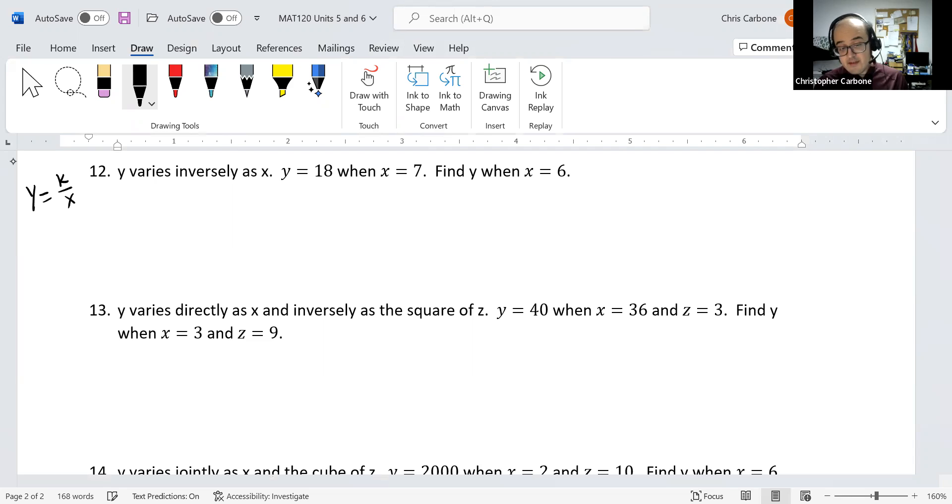When y is 18 and x is 7, 18 would be equal to k divided by 7. We multiply both sides by 7 to solve for k. So k would be equal to 18 times 7, which is 126.